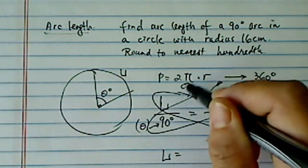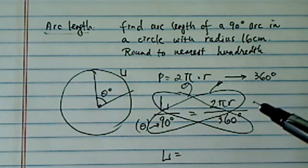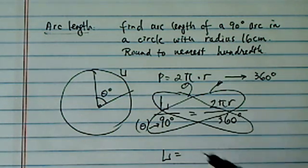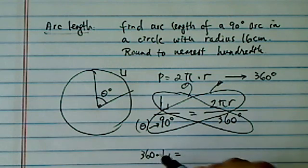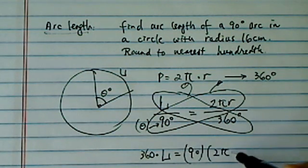What I'm doing here is I draw a butterfly. This is the quickest way to get out of a fraction with the equation. So basically it says L times 360 cross multiply is equal to 90 times 2 pi r.